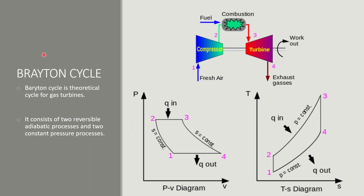Now we have the Brayton cycle — it is a theoretical cycle for gas turbines. We use fresh air in the compressor, so we have an isentropic process 1 to 2, then we have an isobaric heat addition process where we provide fuel in the combustion chamber. Then we have a turbine which gives work output via an isentropic process, and finally an exhaust process 4 to 1 where heat is rejected.